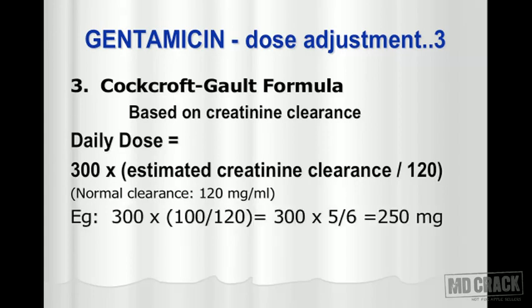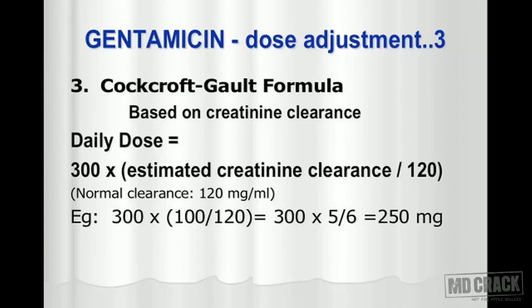When the patient is suffering from renal dysfunction, the creatinine clearance is going to be less. For example, if estimated creatinine clearance is 100, the calculation is 300 multiplied by 100 divided by 120, which equals 300 multiplied by 5/6, giving 250 milligrams. If creatinine clearance were normal at 120, the dose would be the usual 300 mg; since clearance is reduced to 100, the dose becomes 250 milligrams.